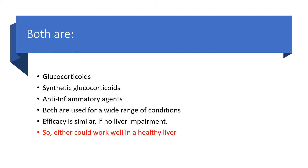Meaning, in the face of liver impairment, you will likely get less outcome with prednisone because the liver would not be able to metabolize it to prednisolone, which is the active metabolite. So you could use either prednisone or prednisolone in a healthy individual with a healthy liver.